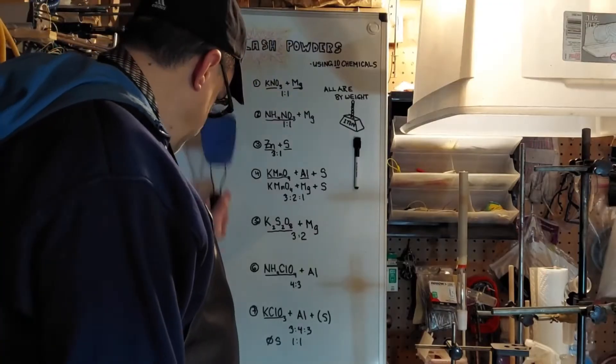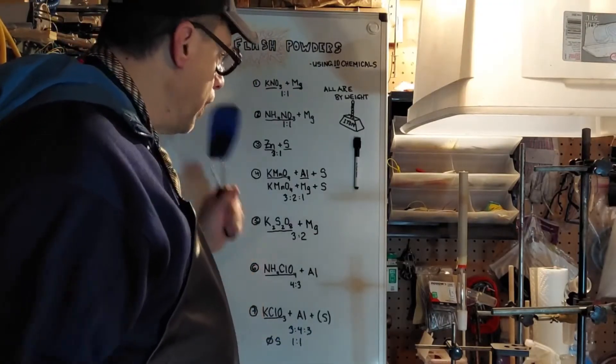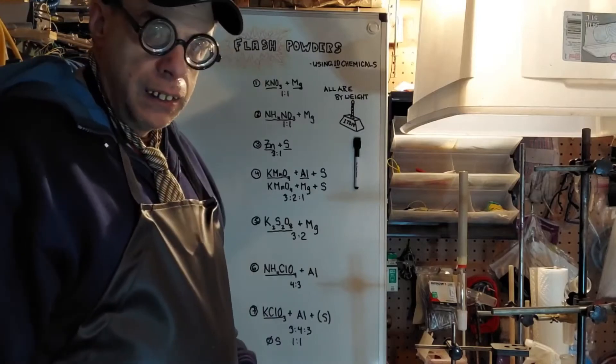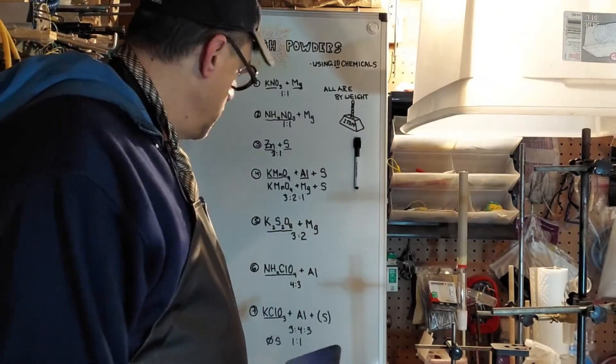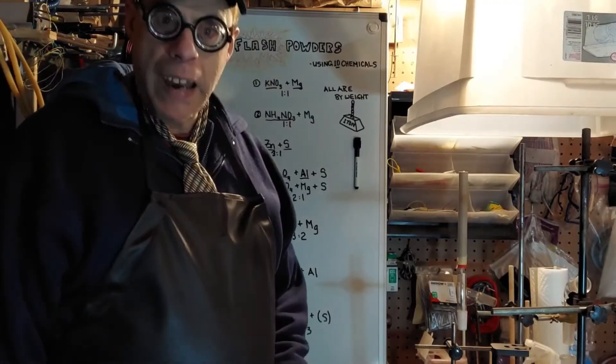That's about it there. Black powders, 10 chemicals. These are seven of about a hundred plus things that you can mix and make a flash powder. So just be careful when you're doing this. I think that's about it again. Thanks.